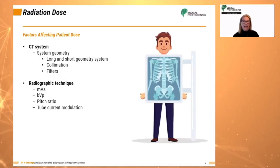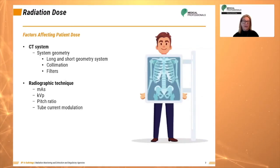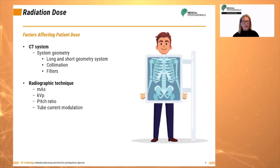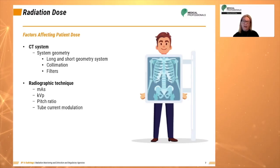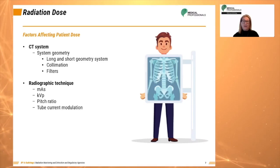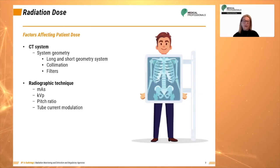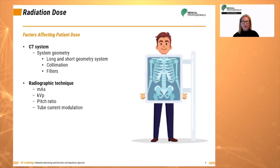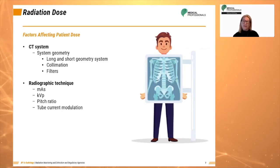Looking at system factors and technologist-controlled factors that affect patient dose: short geometry increases the concentration of photons per unit area and increases patient dose, though an advantage is the reduction of noise. Long geometry, where the source-to-skin distance is longer, results in less patient exposure. Due to the inverse square law, the intensity of radiation varies inversely with the square of the distance from the source.